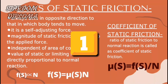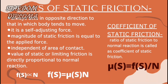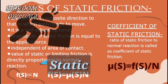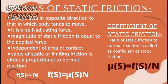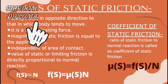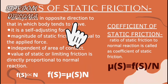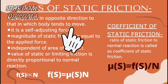First, let us see about the laws of static friction. We all know what static friction is — a type of friction in which the body remains stationary is called static friction. Now let us look at the laws. The first law is that it always acts in the opposite direction to that in which the body tends to move. That means this frictional force acts in the opposite direction to the motion of the object.